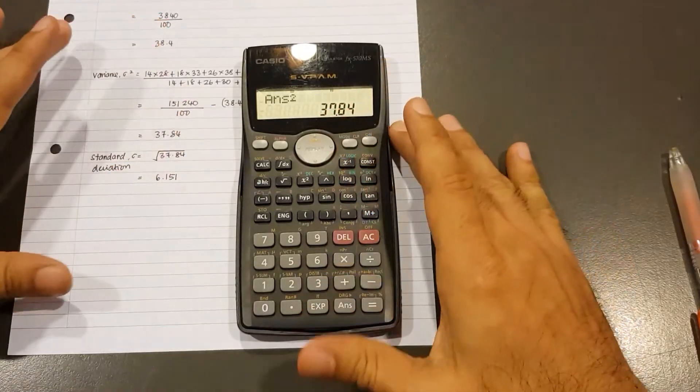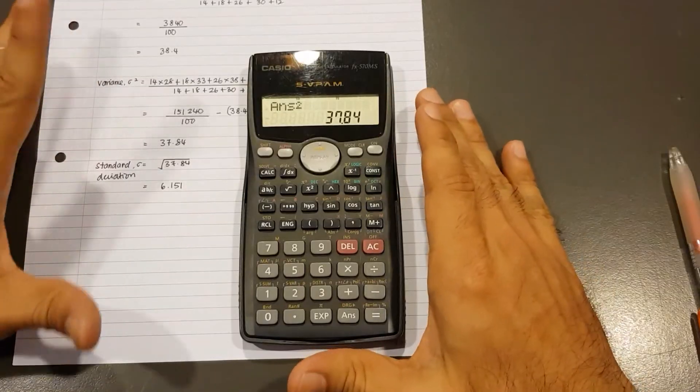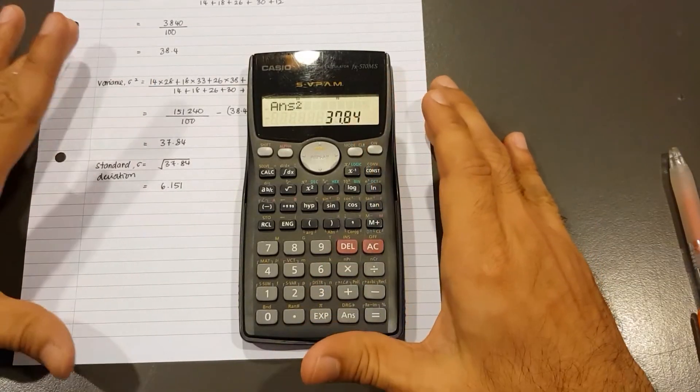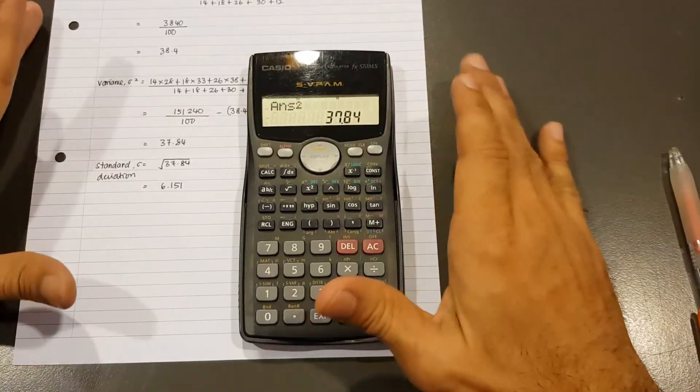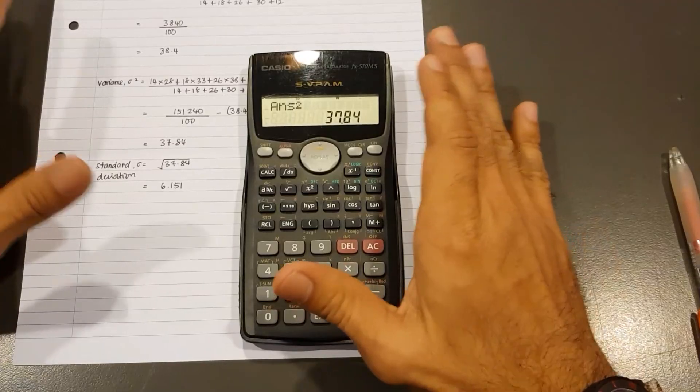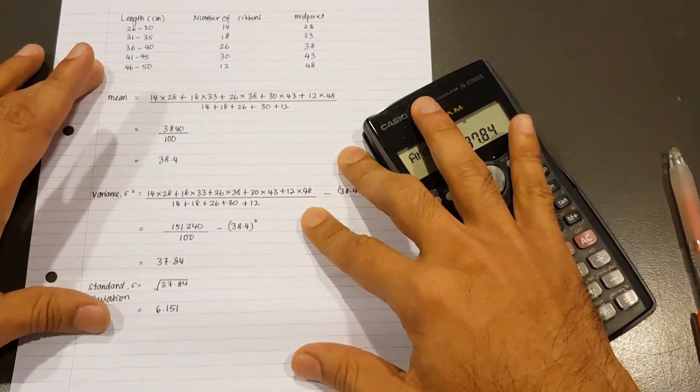That's for this calculator, 570MS. I'll make a second video for the other calculators as well. Because I don't want to get you guys confused. Because some of you are using this calculator. Some of you may be using a different version of the calculator. But I will use the same question, the same table as this.